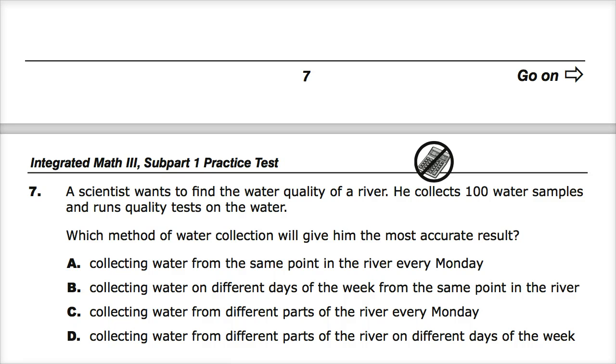Question number seven. The question says, a scientist wants to find the water quality of a river. He collects a hundred water samples and runs quality tests on that water. Which method of water collection will give him the most accurate result?